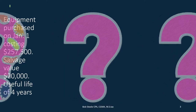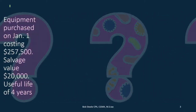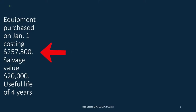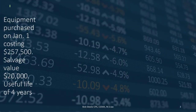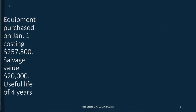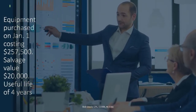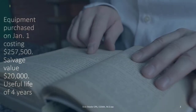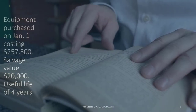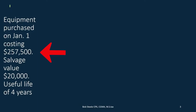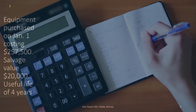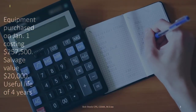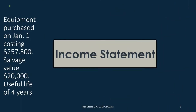The problem is this: if we expense that $257,500 in the year of purchase it will bring down net income, and that could distort our net income when we compare year over year, because we would have a reduction of this large purchase which hasn't been consumed yet — it hasn't been used. So in accordance with the matching principle we need to allocate that amount over the useful life, and in so doing we will allocate it in such a way that net income will be more evenly affected, thereby making the comparability of the income statement a lot better.